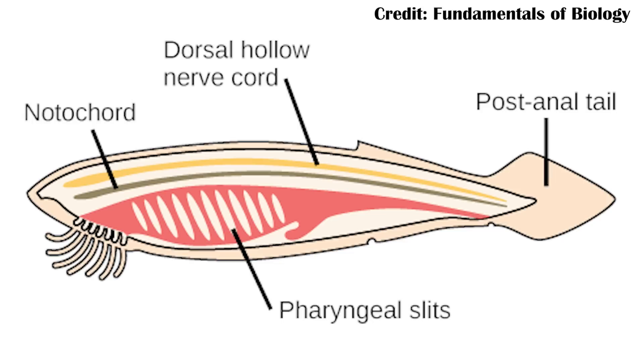And finally, you have a post-anal tail — meaning after the butt, there's a tail that sticks out. This is why you see fish pooping from not the very end of their body. Meanwhile, a lot of insects do poop from the end of their body. So it is a distinctive feature of the chordates.